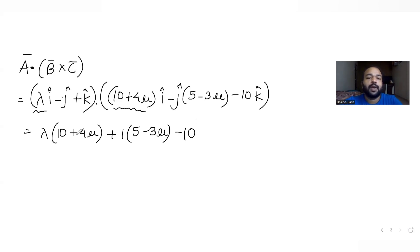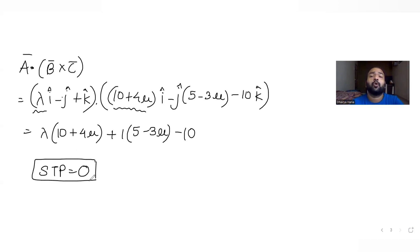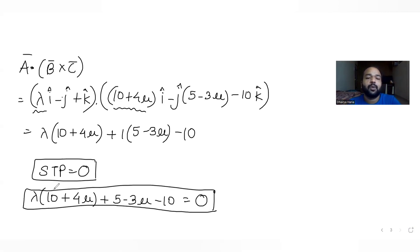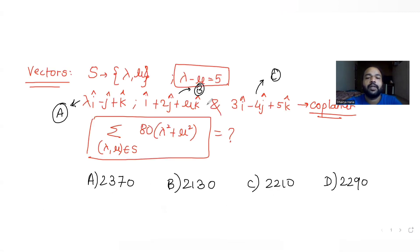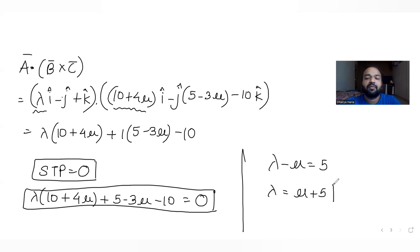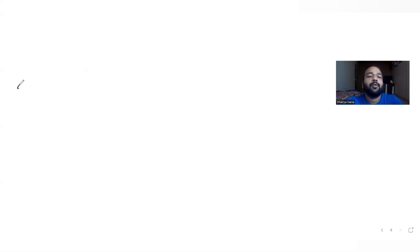Setting the scalar triple product equal to zero for coplanarity: lambda(10 + 4mu) + (5 - 3mu) - 10 = 0. We also have the second condition that lambda minus mu equals 5, so lambda equals mu plus 5. Substituting lambda = mu + 5 into this equation gives: (mu + 5)(10 + 4mu) + (5 - 3mu) - 10 = 0.